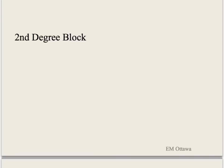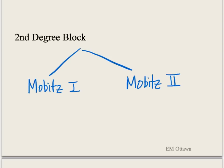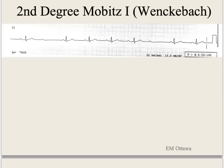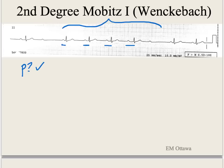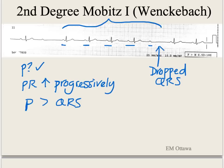Second degree AV block is divided into Mobitz type 1 and type 2. Mobitz type 1 is also known as Wenckebach. In Mobitz type 1, the block is in or above the AV node. There are P waves. The PR interval progressively gets longer, and eventually there is a P with a dropped QRS complex — this defines second degree Mobitz type 1. There is no one-to-one relationship between P and QRS because there will be more P waves than QRS complexes. The RR interval is irregular, and the QRS complexes are narrow.